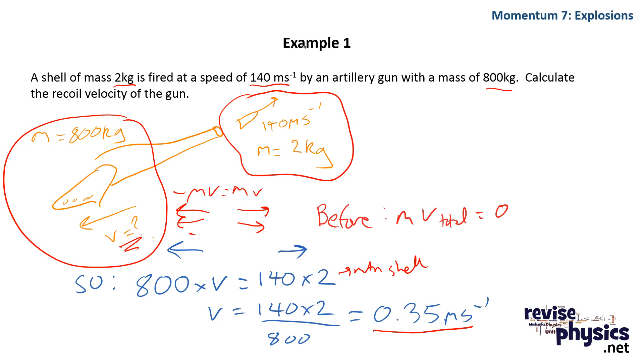By rearranging the equation to get it in terms of velocity and plugging our numbers in, we get a final velocity of 0.35 meters per second.